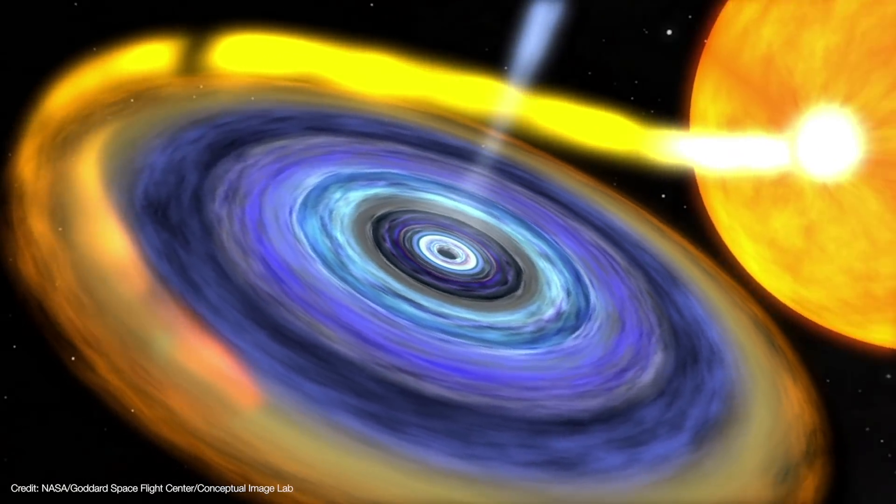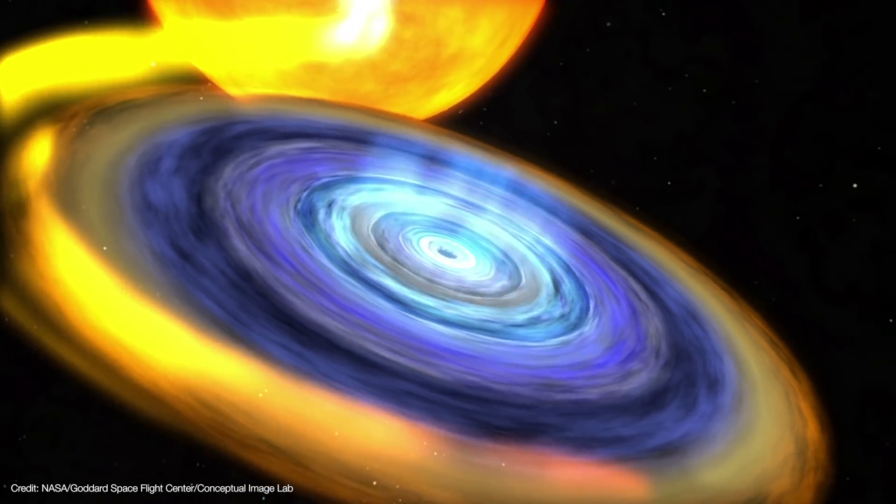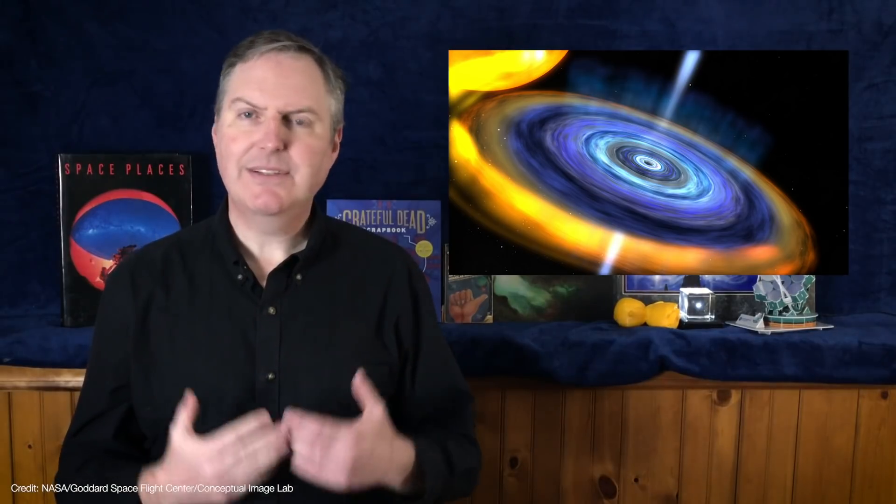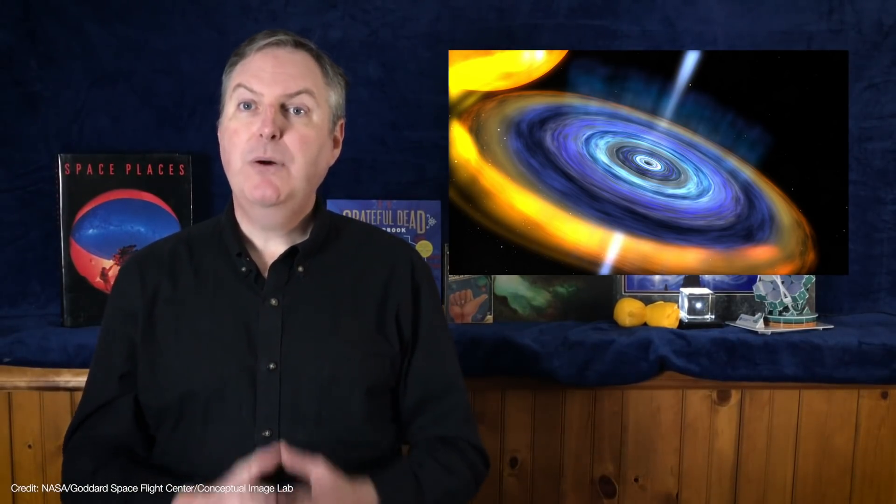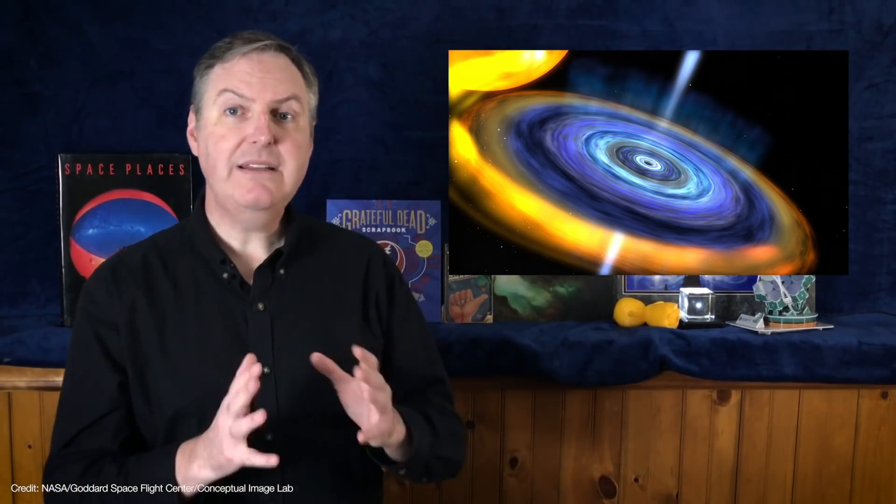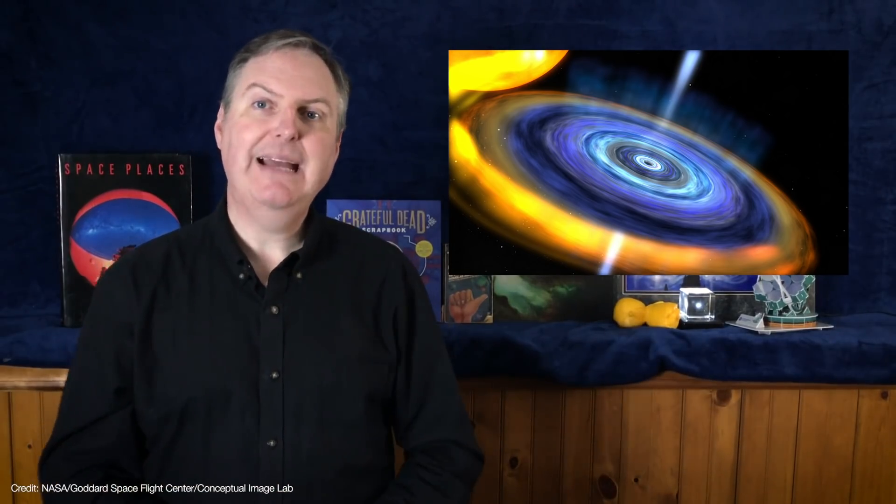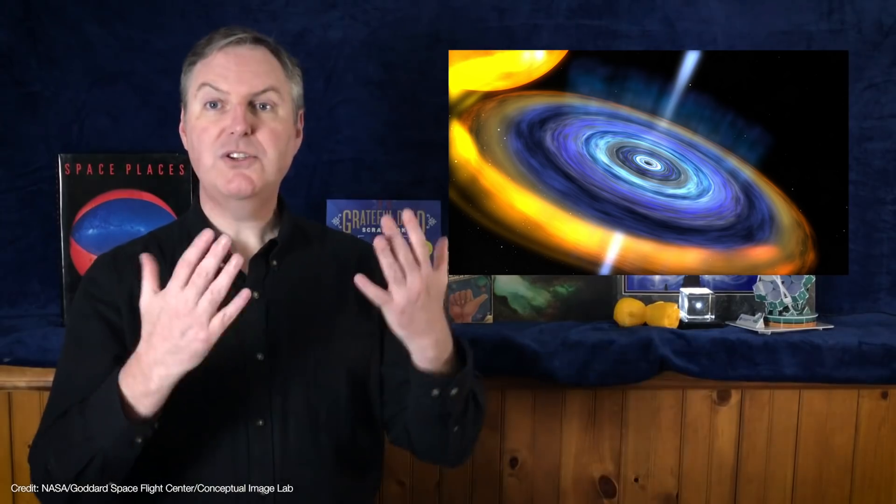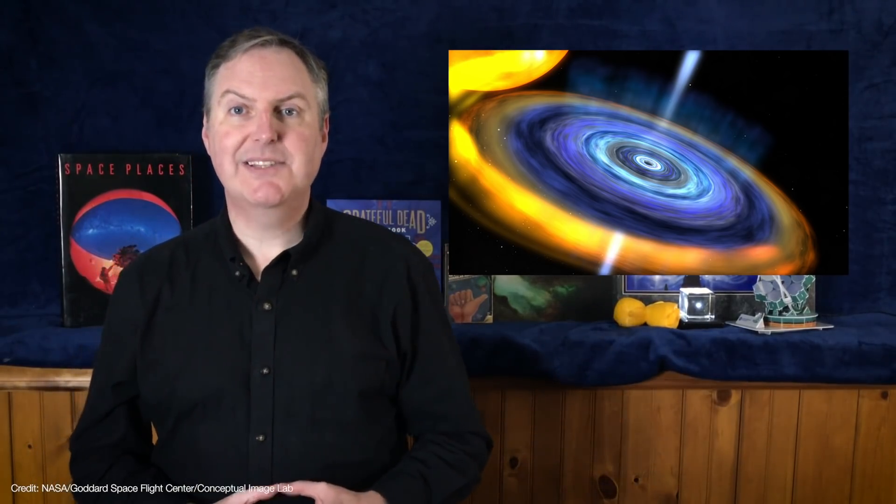After all, black holes don't radiate, so we rely on their accretion disks to reveal their presence. As their name implies, accretion disks are thought to feed black holes, causing them to grow. But exactly how this happens isn't completely understood. But we do understand that the spinning disk generates a powerful magnetic field. This field rips matter off the disk and launches it along the black hole spin axis as a jet.